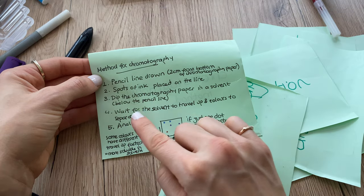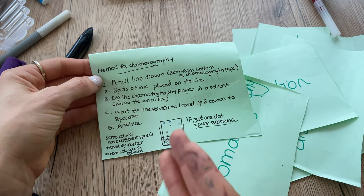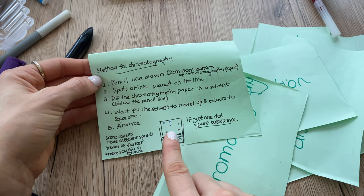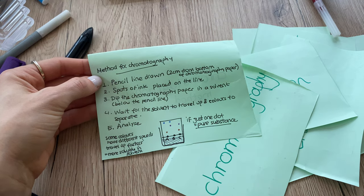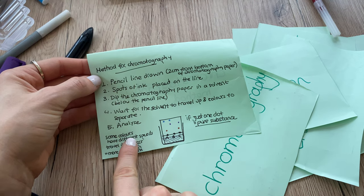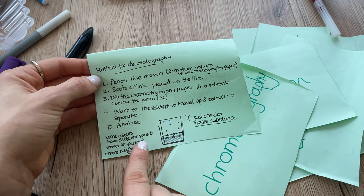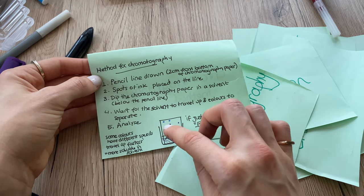This could be water or ethanol. Wait for the solvent to travel up the chromatography paper and as the solvent travels up, all of the substances that dissolve in the solvent are also going to go up and some colors have different speeds.